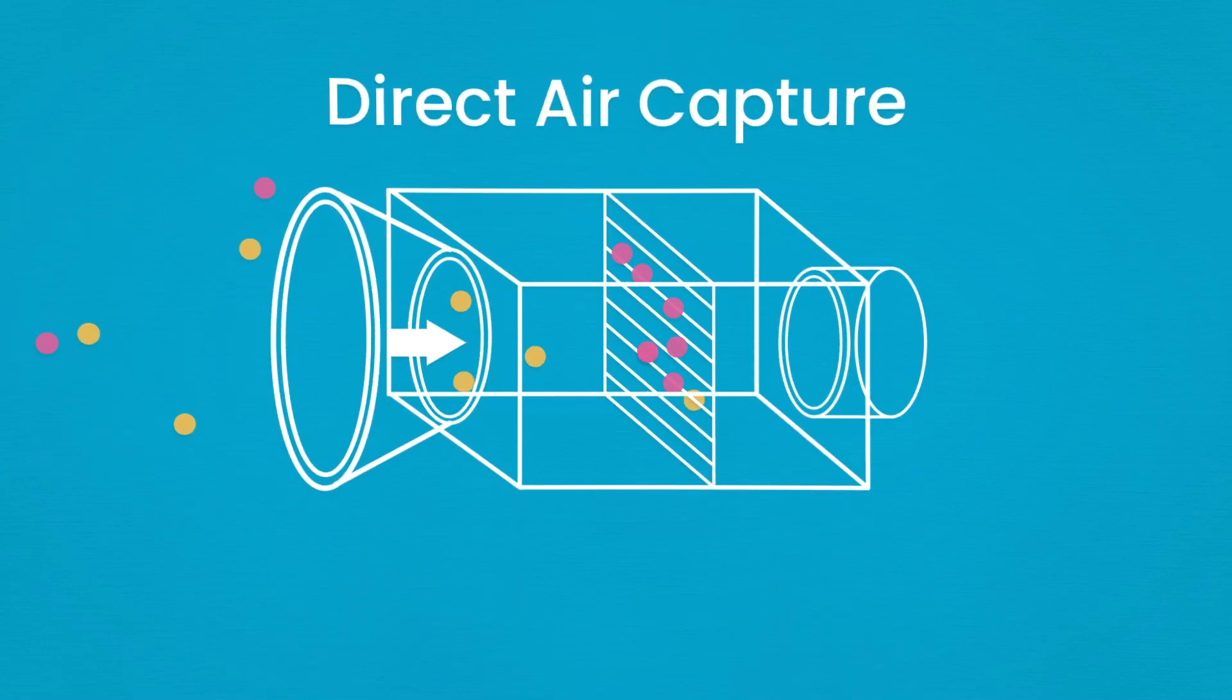Direct air capture, also known as DAC, is a process where carbon dioxide is captured from air using filters or adsorbents to lower carbon dioxide concentrations.